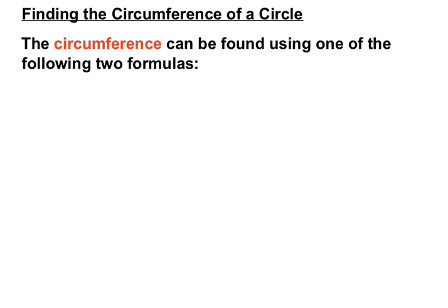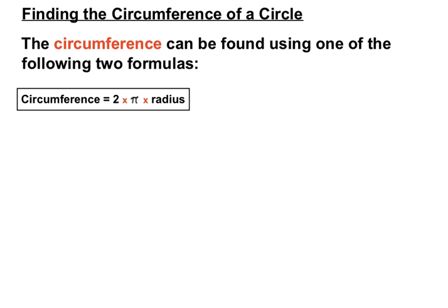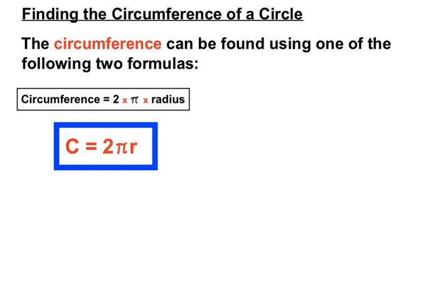The main part of the video: finding the circumference of a circle. The circumference can be found using one of two formulas. We've got circumference equals 2 times pi times the radius, summarised as C = 2πr. Remember there's an invisible multiplication sign between the 2, pi, and r. So 2 times pi times whatever the radius is will give us the circumference of the circle.